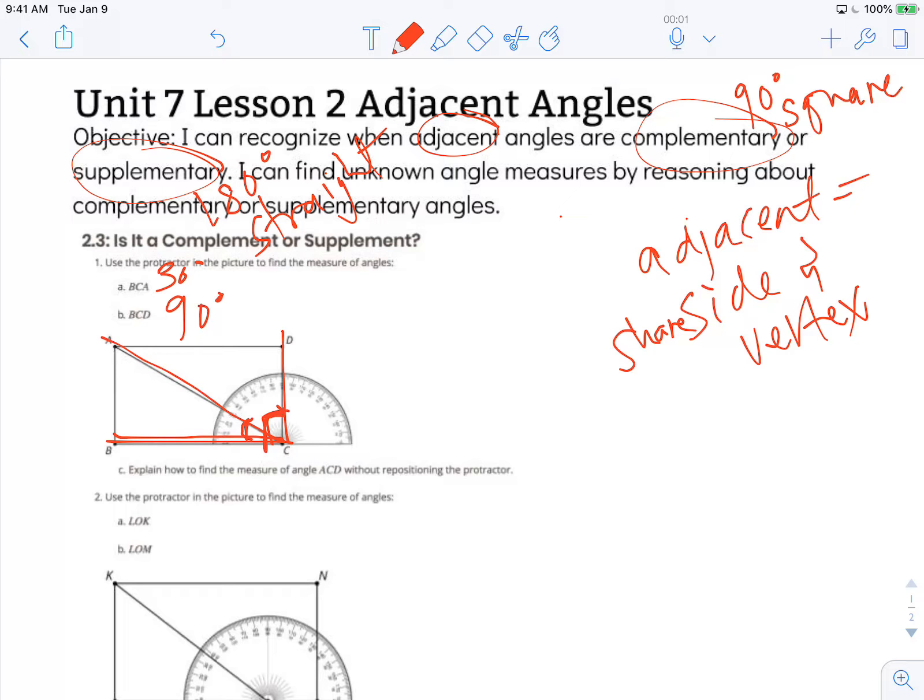Letter C says, explain how to find the measure of angle ACD without repositioning the protractor. Well, I know that these two angles, BCA and ACD, together form the angle BCD. So, I can substitute what I know. I know that the angle measure BCA is 30 degrees.